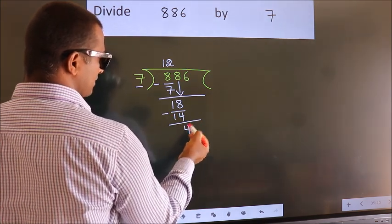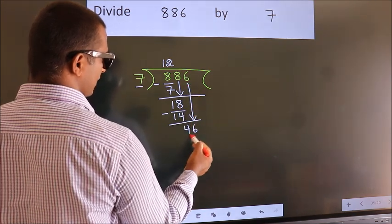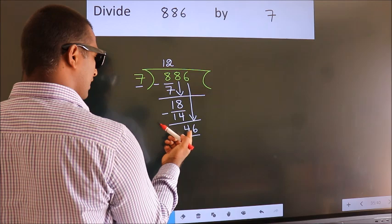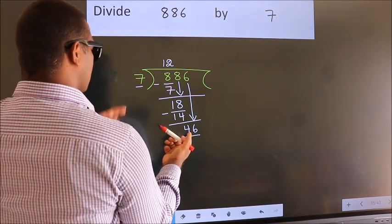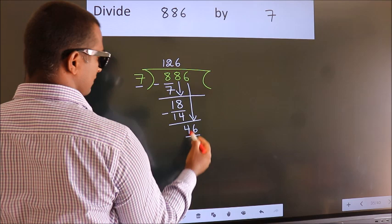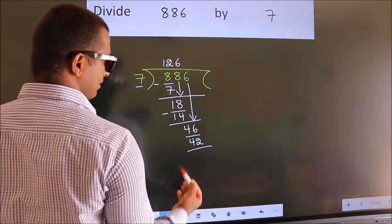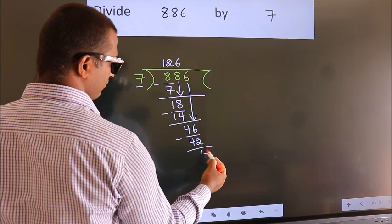After this, bring down the beside number. So 6 down, so 46. A number close to 46 in the 7 table is 7 sixes 42. Now we subtract. We get 4.